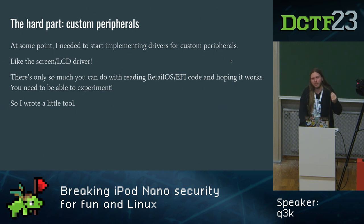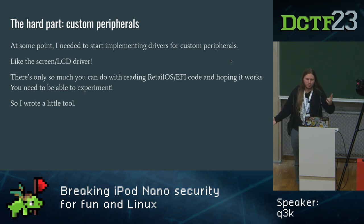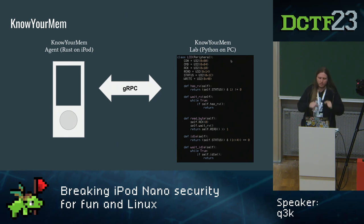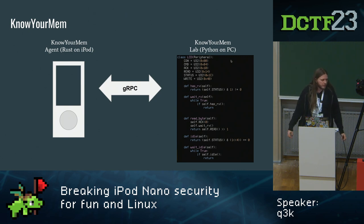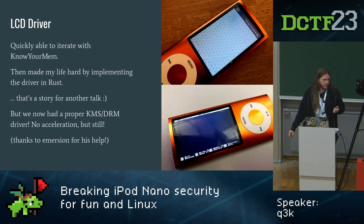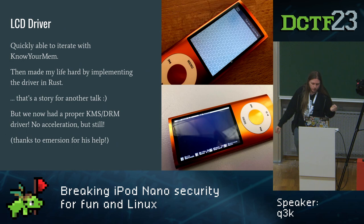I had to make my life easier. I didn't want to use Python on the iPod to poke at memory — this thing only has 64 megs of RAM. So I shaved yaks and implemented a piece of code called KnowYourMem, a small Rust agent running on the device that takes zero RAM and exposes a gRPC API I can access from my lab environment. This lets me write prototype driver implementations as custom DSL-style classes before committing to a proper kernel driver. The LCD driver was quite easy to do with KnowYourMem, though I decided to write the driver itself in Rust.